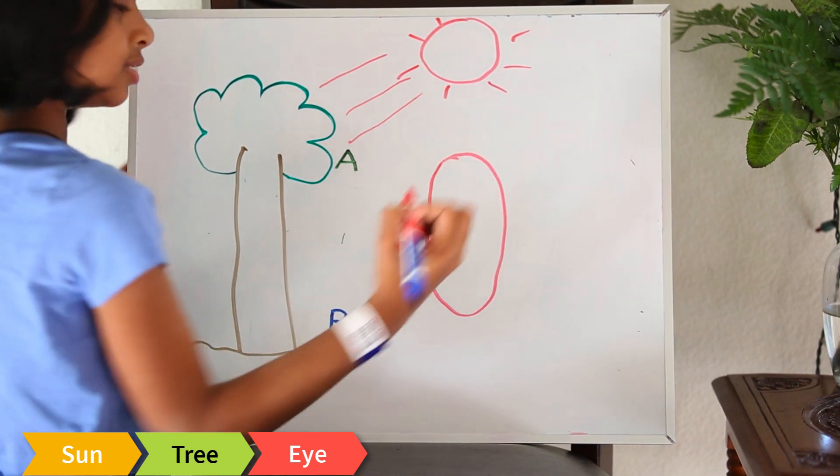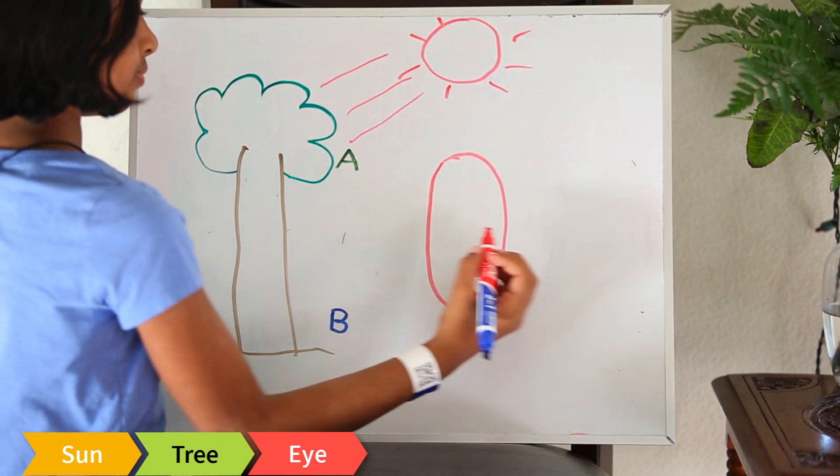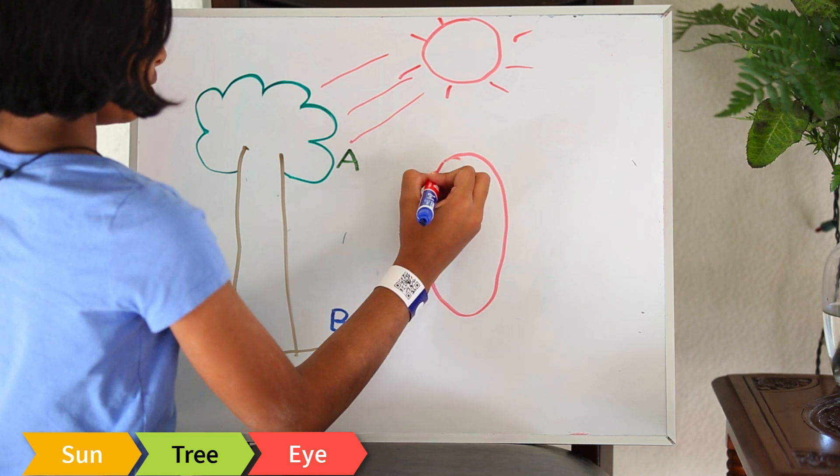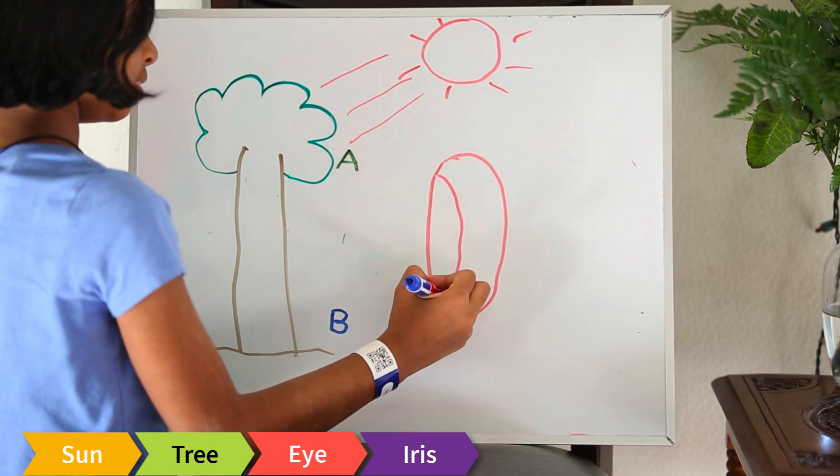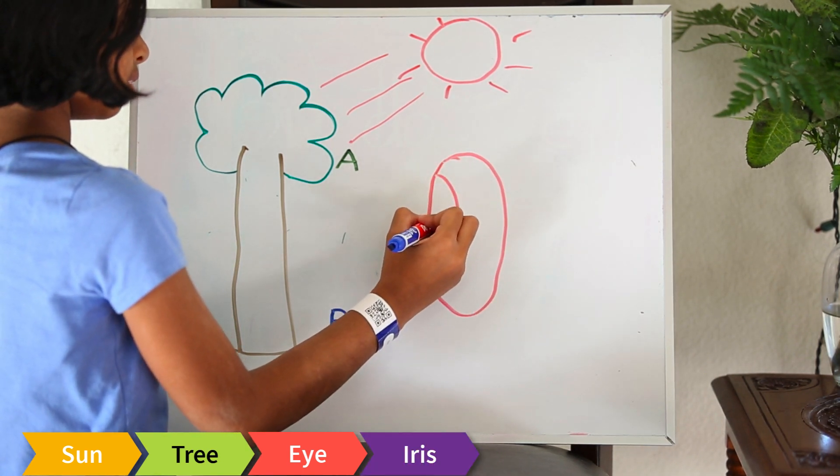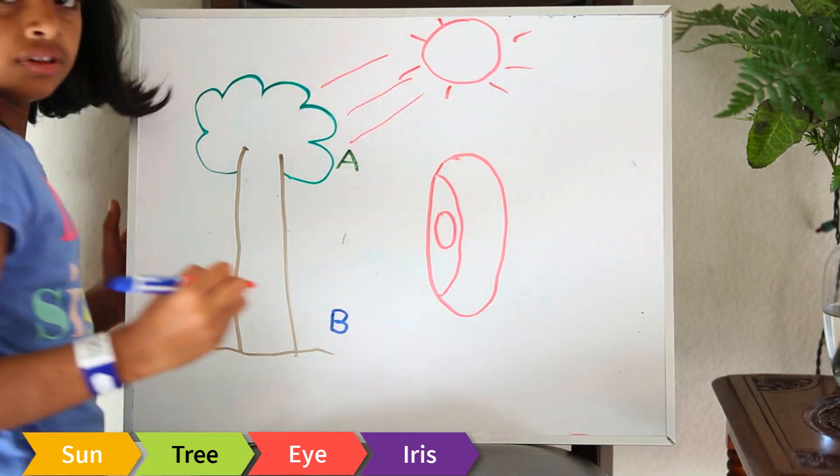So this is our eye. That's the iris, and that's the pupil.